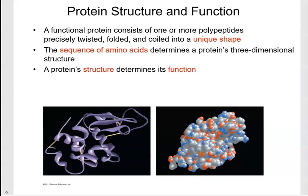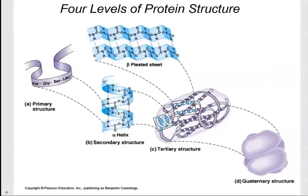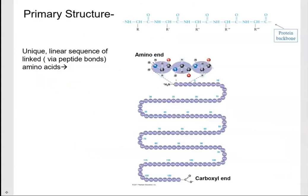The unique 3D shape of a protein is very important. That three-dimensional structure is determined by the actual sequence of amino acids, and then the protein folds into a complex structure that looks messy but is very organized and specific because it carries out a very specific function. Proteins are organized in four different levels: primary structure, secondary structure, tertiary structure, and quaternary structure.